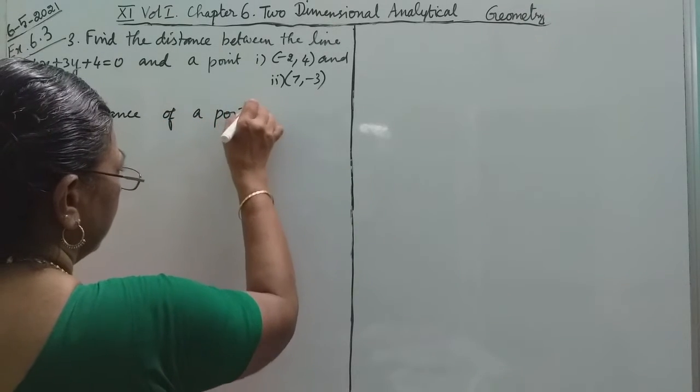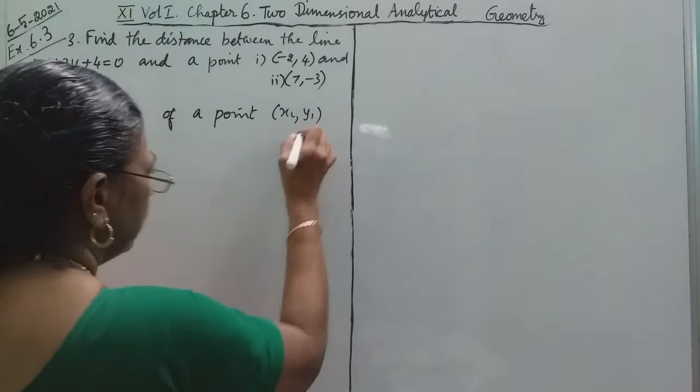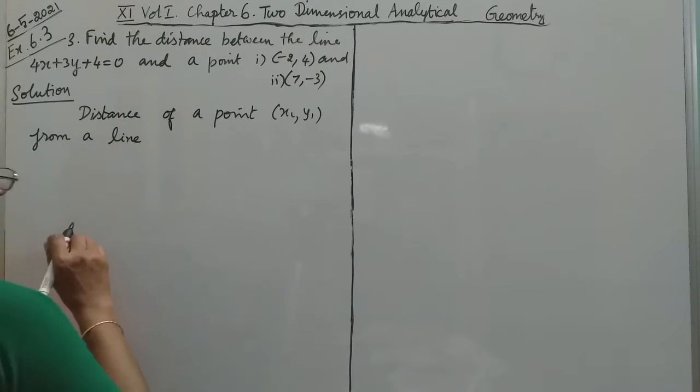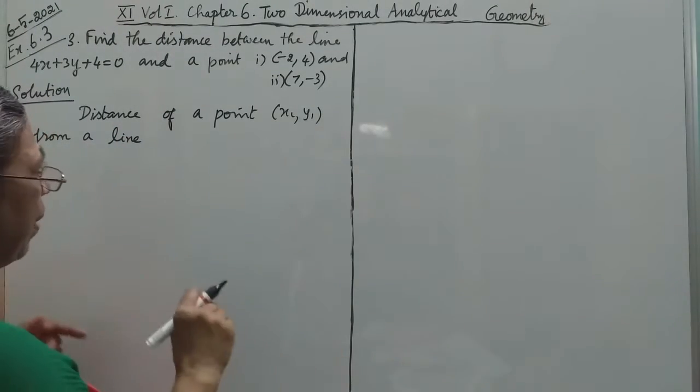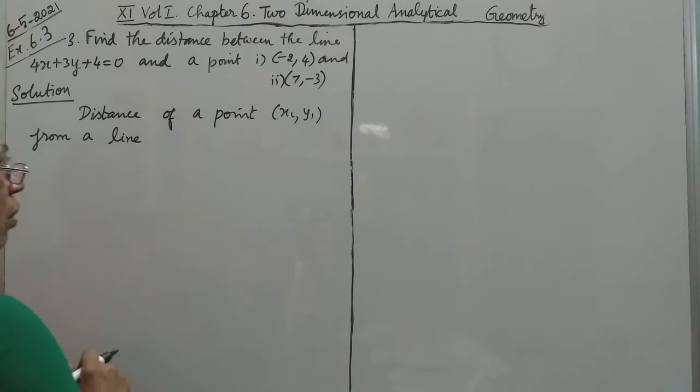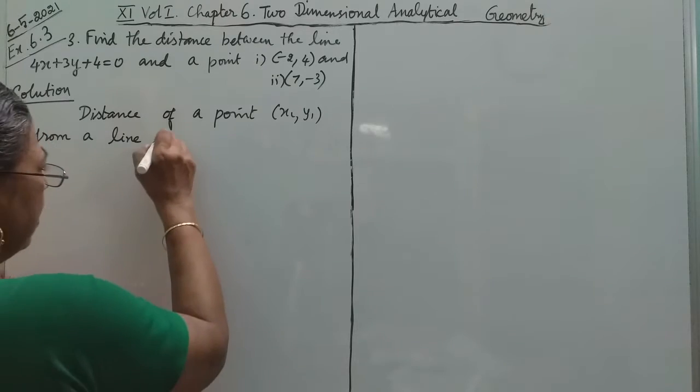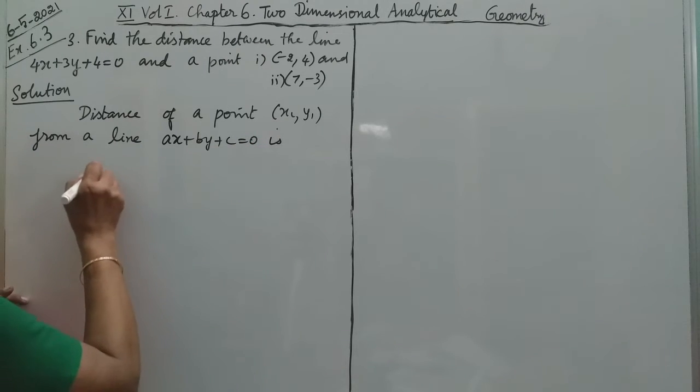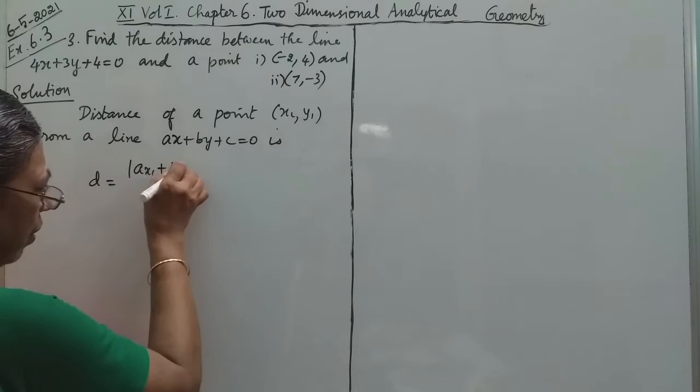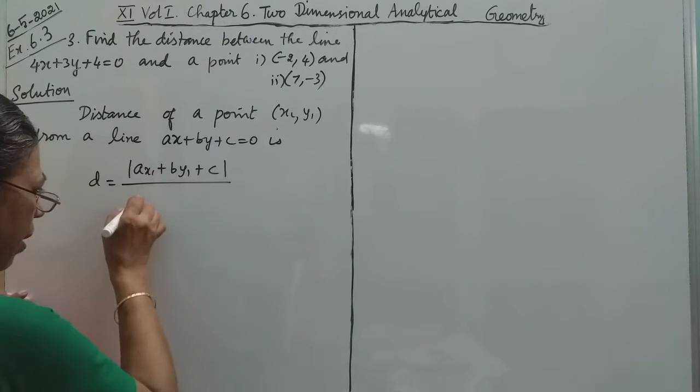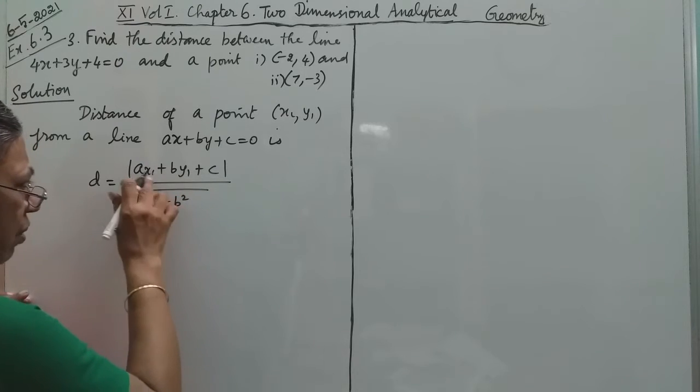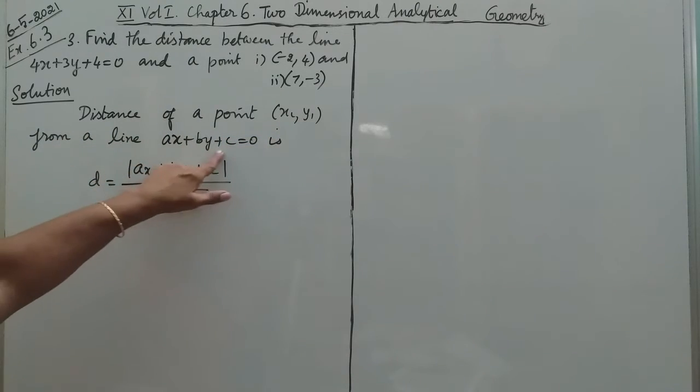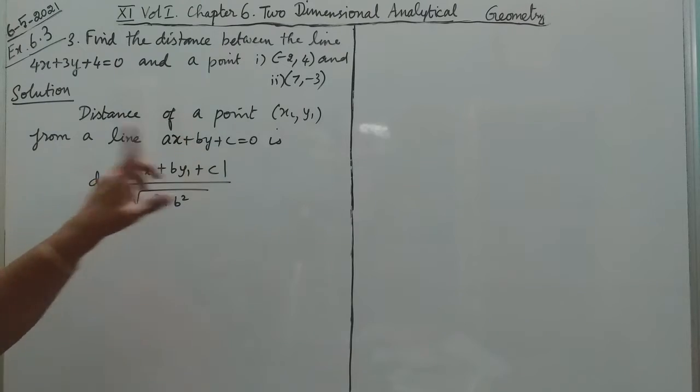The distance of a point from a line is given by the formula: modulus of Ax1 plus By1 plus C divided by the square root of A squared plus B squared, where A and B are the x-coefficient and y-coefficient respectively. Distance of a point from a line and distance of a line from a point are the same.